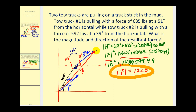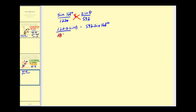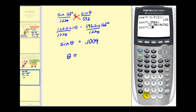Next, we need to determine the direction of that force. We'll use the law of sines to find this acute angle in the triangle, and from that figure out what this overall direction angle would be — 51 degrees minus whatever that angle is. So the sine of 168 degrees divided by 1,220 equals the sine of theta divided by 592. Cross multiplying and dividing by 1,220, sine theta is approximately 0.1009. Going to the calculator for the inverse sine of 0.1009, our angle is approximately 5.8 degrees.